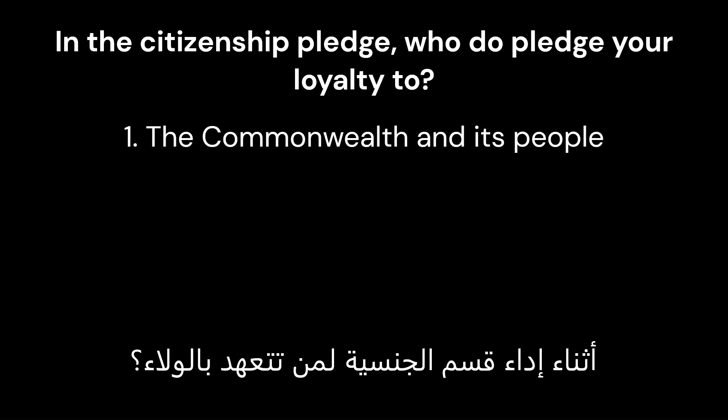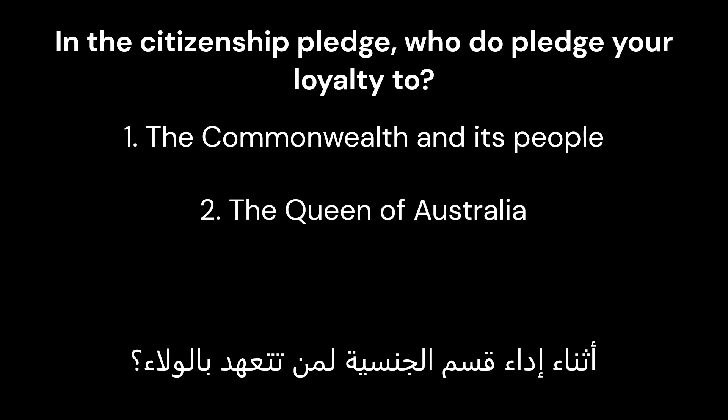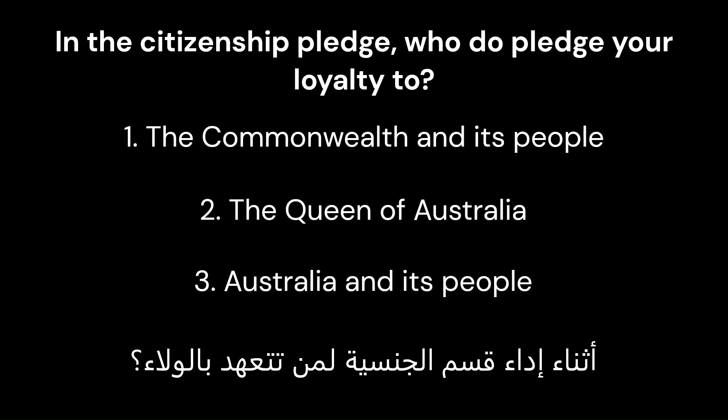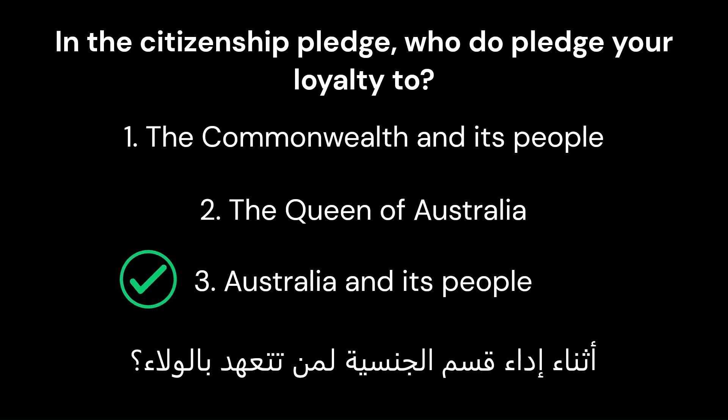Question 8: In the Citizenship Pledge, who do you pledge your loyalty to? Option 1: The Commonwealth and its people. Option 2: The Queen of Australia. Option 3: Australia and its people. Correct answer is 3: Australia and its people.